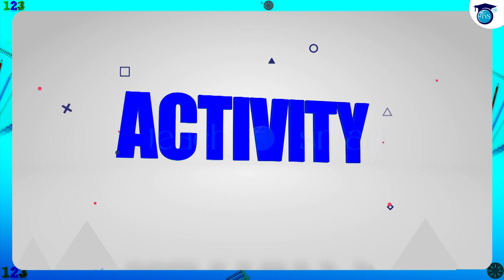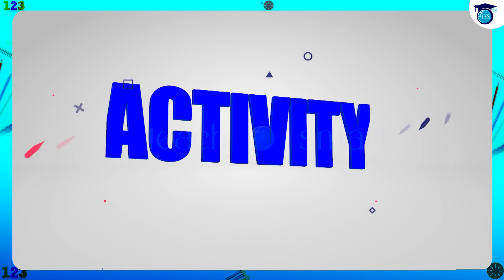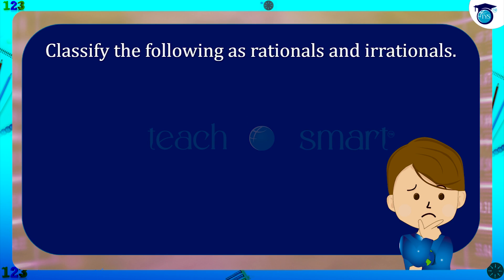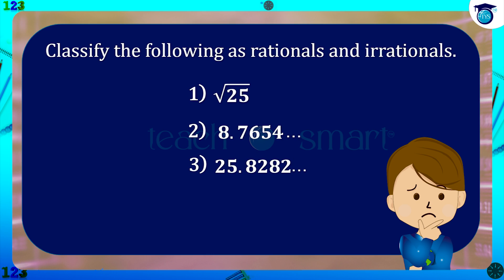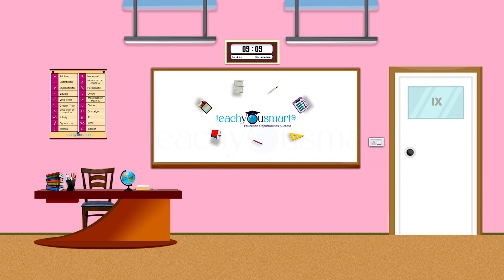Before winding up, let's check how much you understood by doing an activity. Classify the following as rationals and irrationals: first, root 25; second, 8.7654...; third, 25.8282...; fourth, 10.56; and last, zero. That's all for now — see you all in the next class.